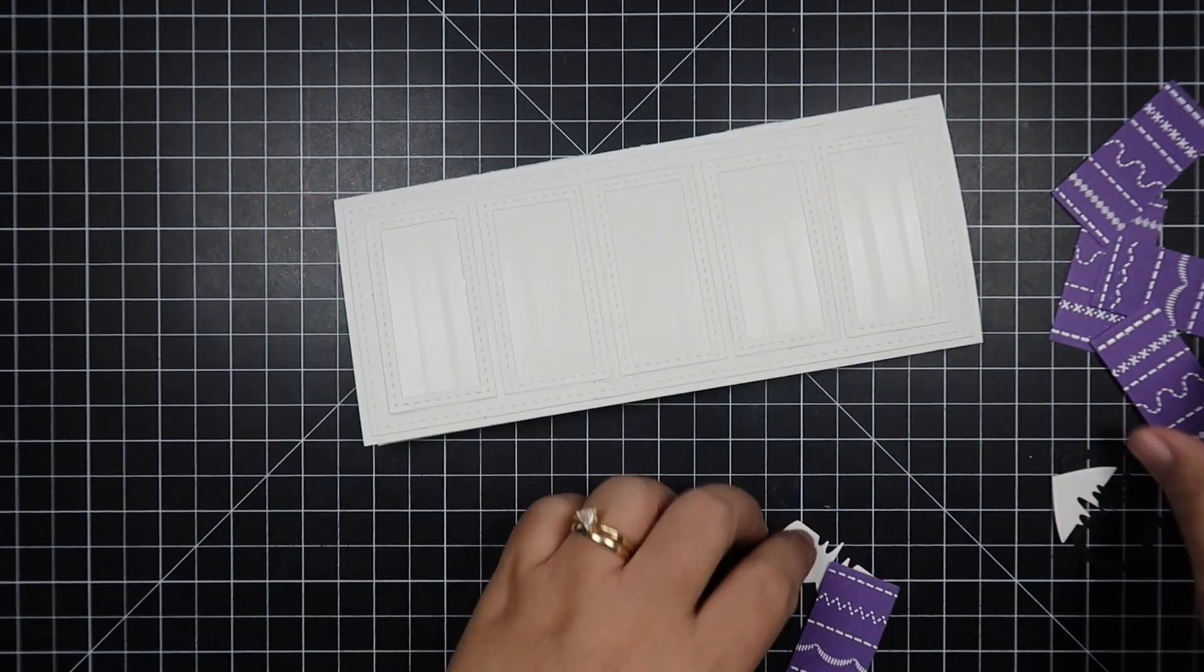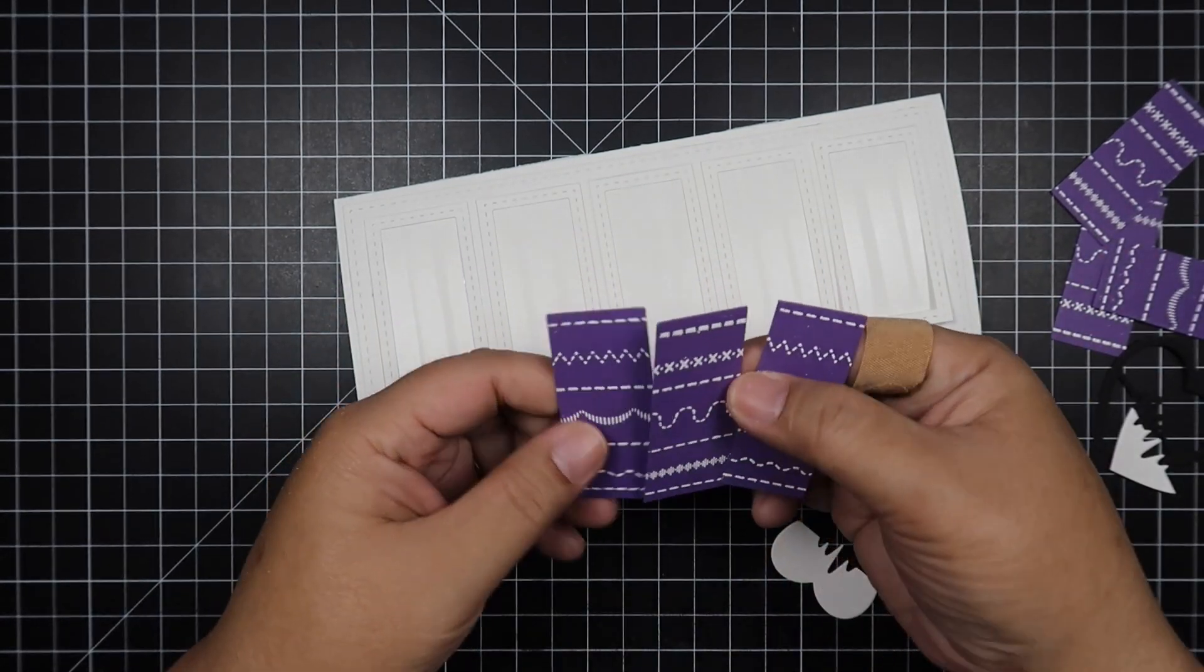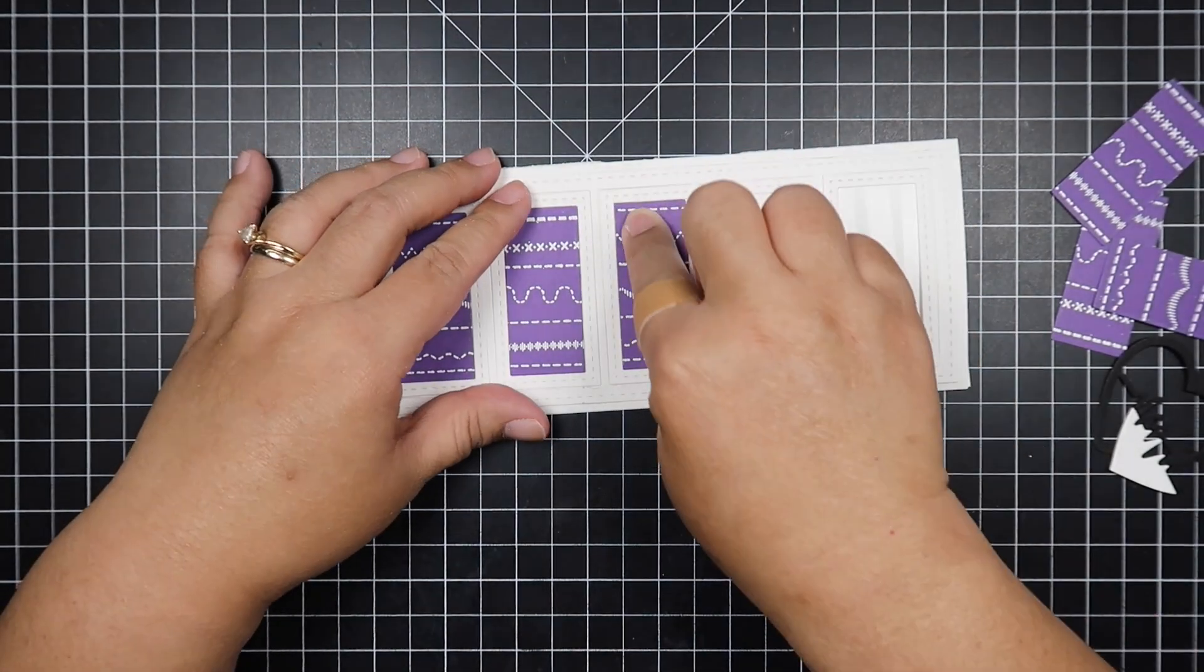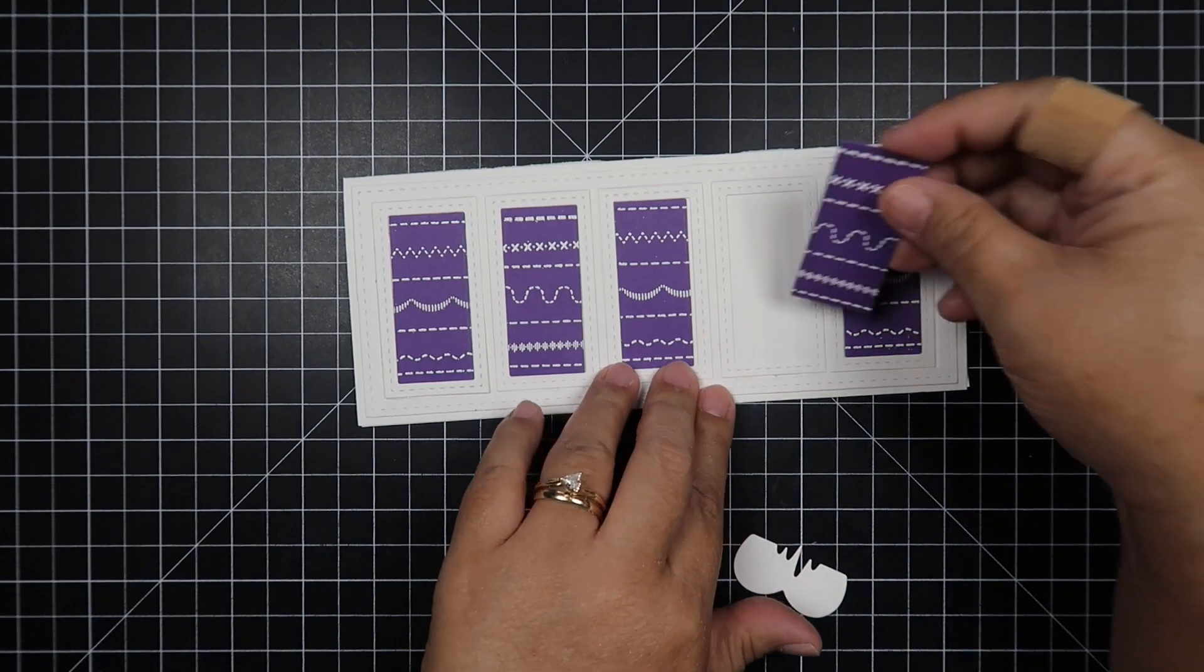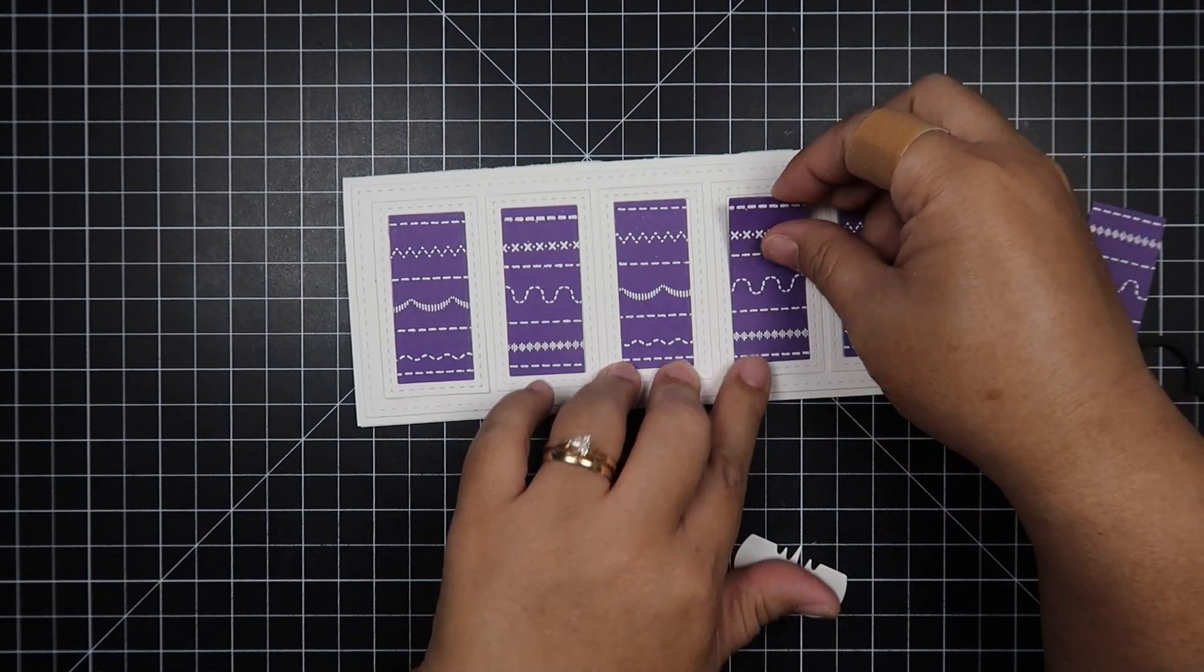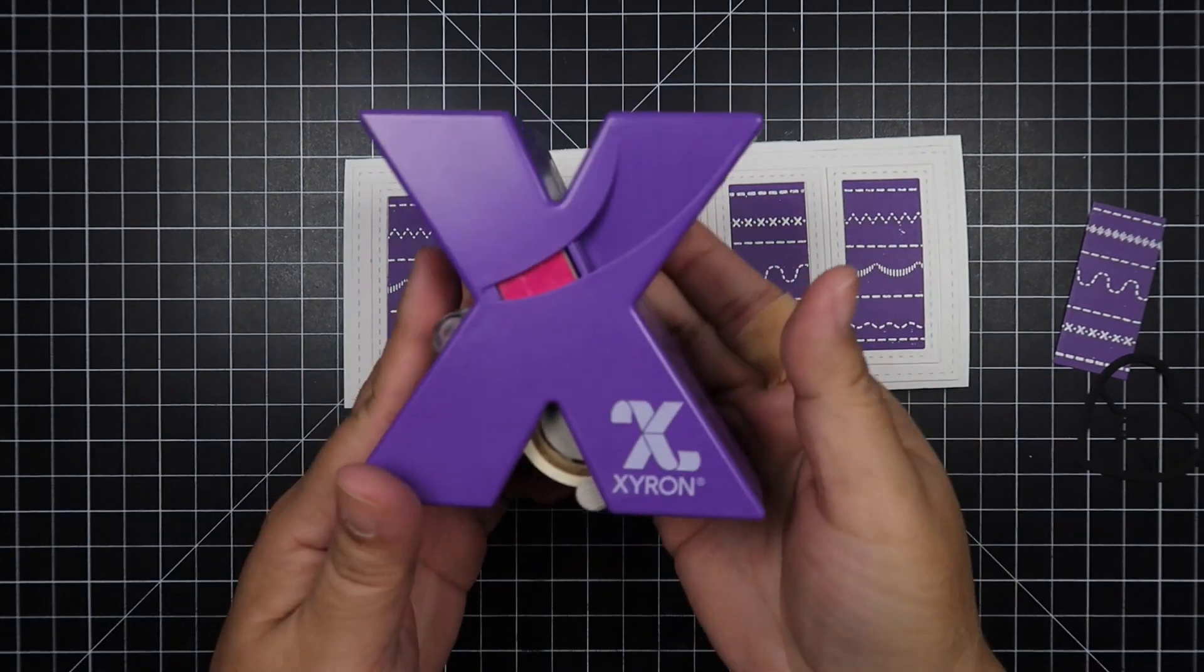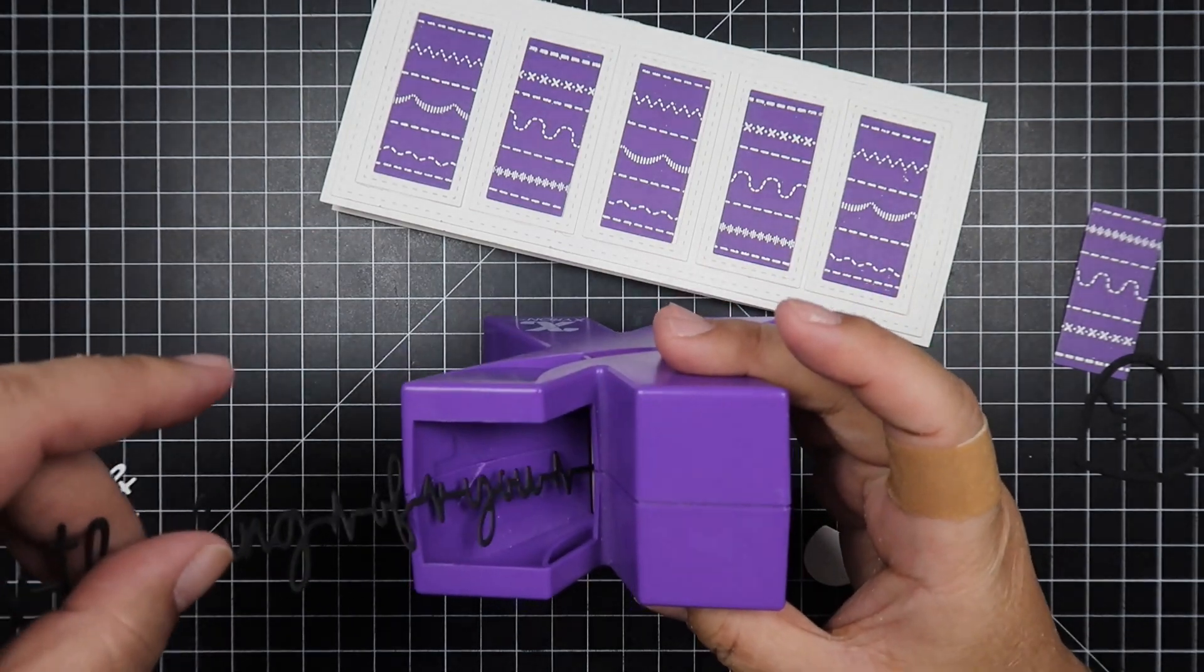Notice here that the patterns are different—one is a zigzag and one has a cross stitch, so I just alternated them. But I did make a point that when I die cut these images, there would be a stitch borderline at the top and bottom, so just pay attention when you do die cut that.